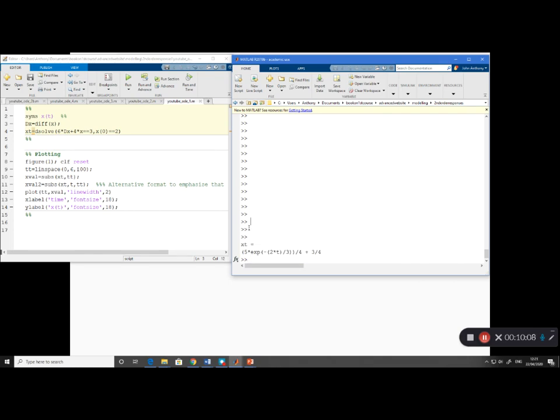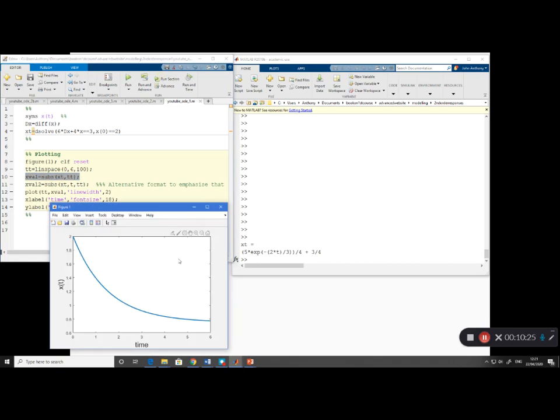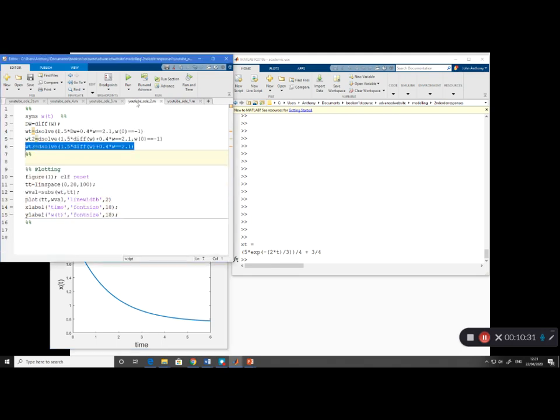Now, what if you wanted to plot that? So you'll see line 9, there's my definition of the times I'm interested in. Line 10, that's where I calculate the numerical values using subs. And then, line 12, that's where I do the plot. So if I run this section, and there you can see the plot appears. x of t against time. Right, next example.